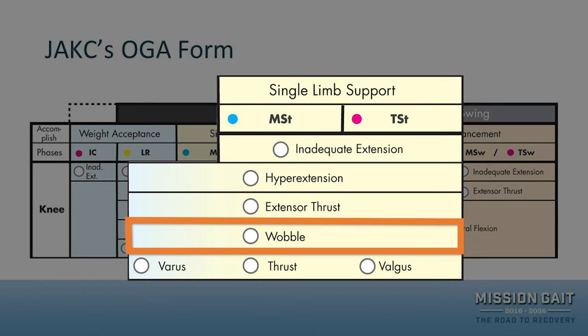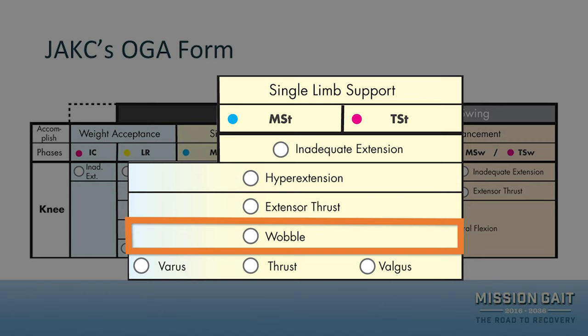Another notable deviation — with a somewhat humorous name — is 'wobble.' Wobble refers to instability within the knee joint where the knee goes into alternating flexion and extension, indicating the joint lacks good neuromuscular control or proprioceptive awareness of where it is in space.